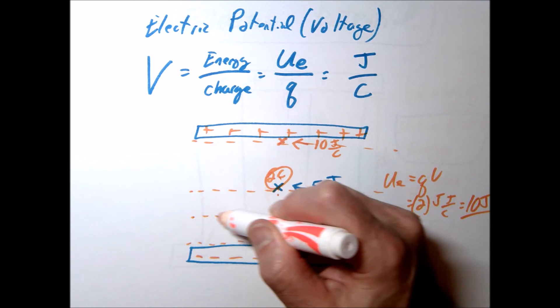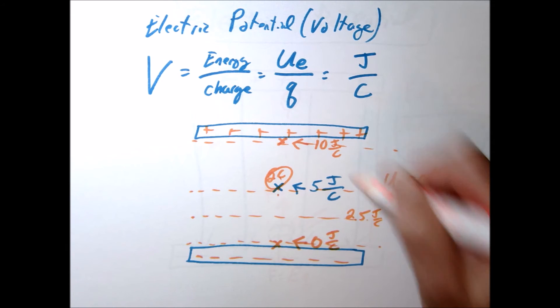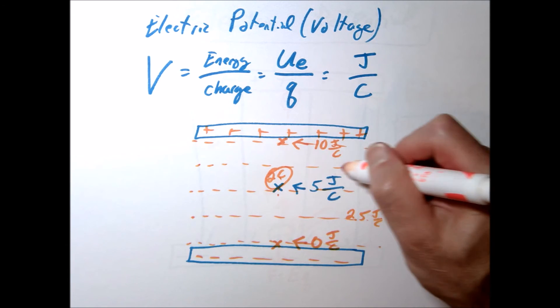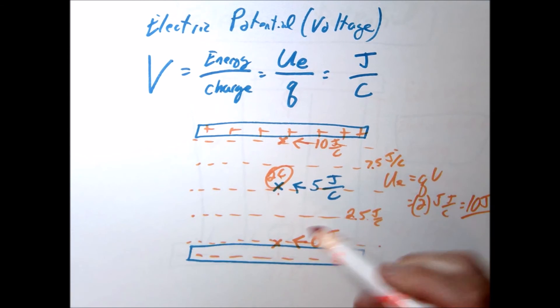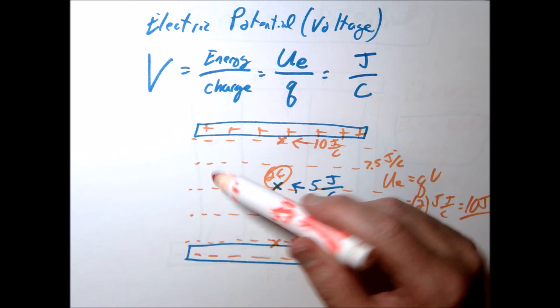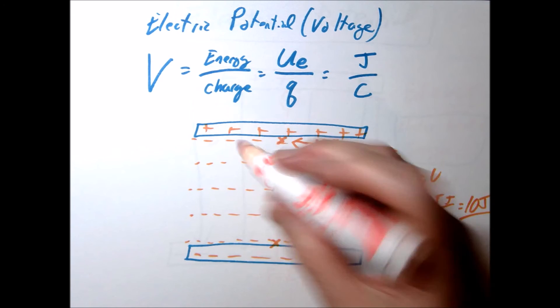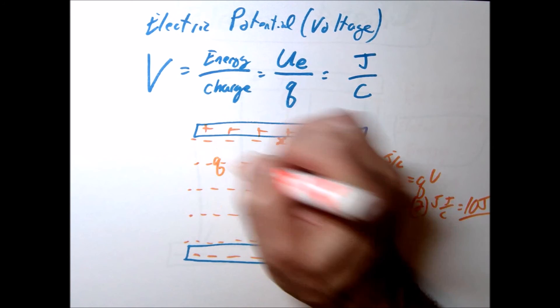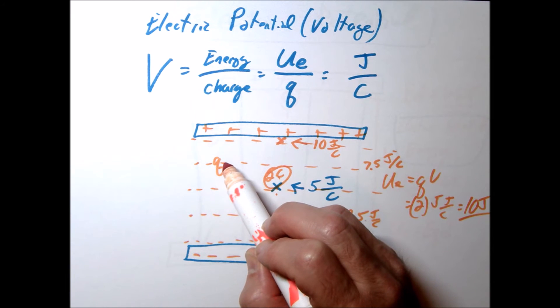If we went halfway in between here, this would be 2.5 joules per coulomb. If we went halfway here, this would be 7.5 joules per coulomb. So at these various locations, there's a certain amount of electric potential. Now, it doesn't take on energy until you actually stick a charge here. Once we put a charge here, then there's going to be a certain amount of potential energy that that charge has.